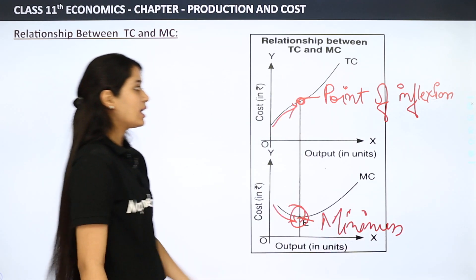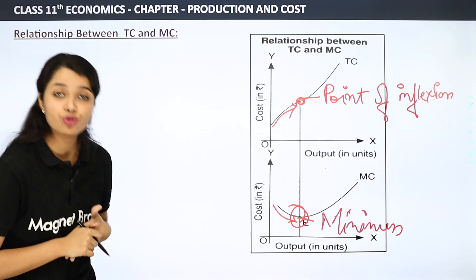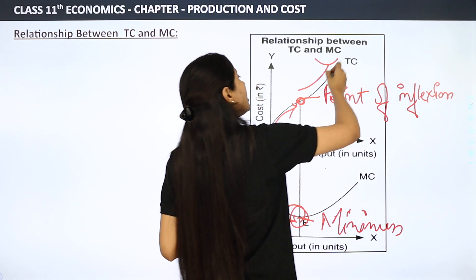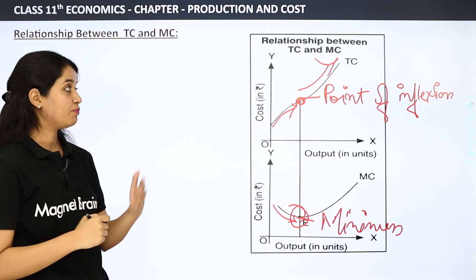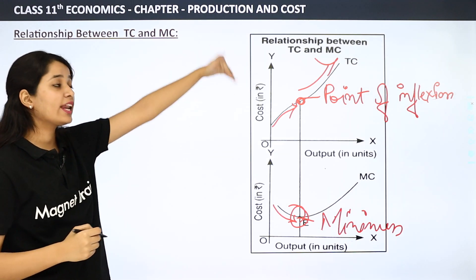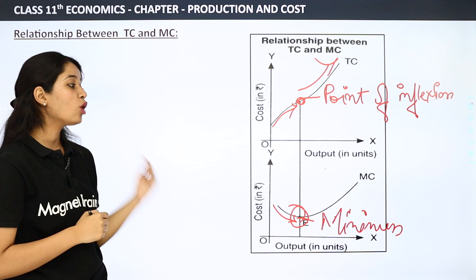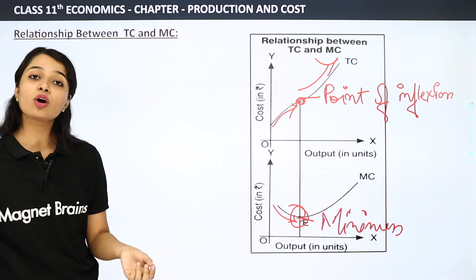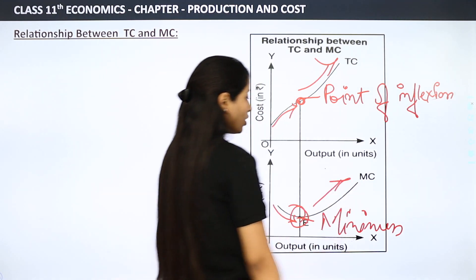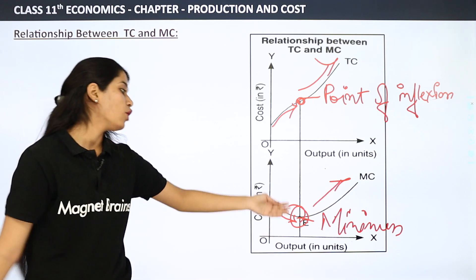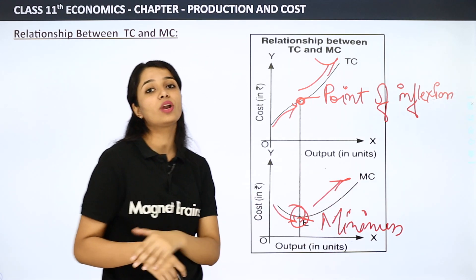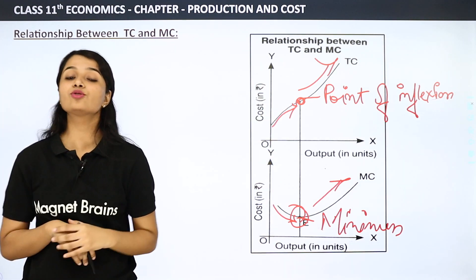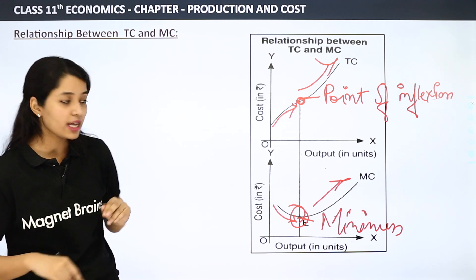After this point, our total cost is increasing at an increasing rate, so how will our marginal cost react? Our marginal cost will also increase by increasing rate. So it has fallen, reached minimum, and now it increases at an increasing rate.